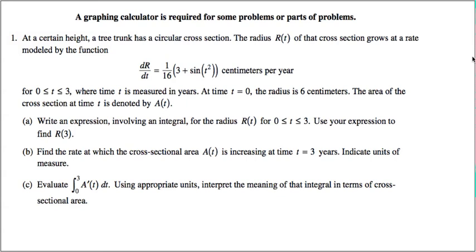Hello, this is the first question in year 2009, form B. Let's look at them together. So here we have, at a certain height, a tree trunk has a circular cross-section. The radius of the cross-section grows at a rate modeled by this function. So this is a rate,